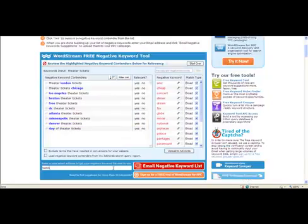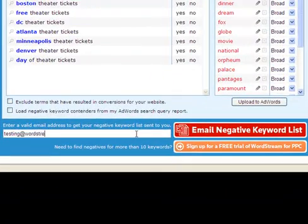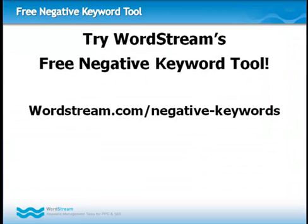When you are done compiling your list of negative keywords, just enter your email address to export the list. Negative keyword research is an essential but time consuming part of PPC campaign management. Setting the right negatives early in your campaign can not only improve your click-through rate, but also conversion rate and quality score. Visit wordstream.com/negative-keyword-tool today to see for yourself how easy negative keyword research can be.